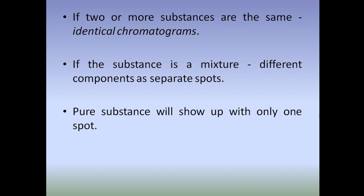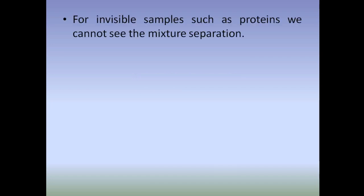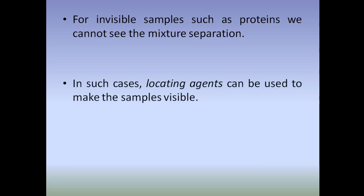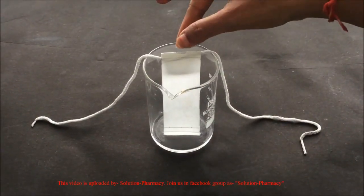A pure substance will show up with only one spot, whereas an impure substance will show more than one spot because of the impurities. Next, an important thing: locating agents. In some cases, samples will be invisible — colorless. In those cases it will be hard to find the distance traveled by the sample. For example, in proteins and amino acids, we cannot see the sample separation. In such cases, locating agents can be used to make the samples visible after the chromatography run — locating agents are sprayed on the paper.